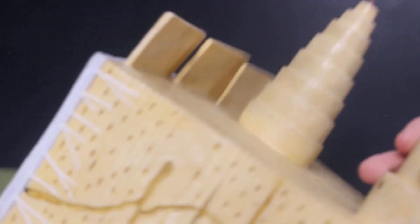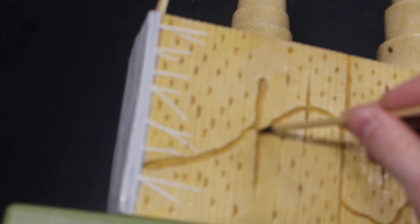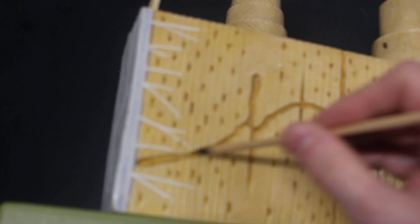Also we have tunnels going the width of the bone. These are referred to as perforating canals. So perforating canals go the width of the bone. And that is it for this model.